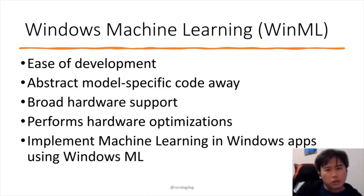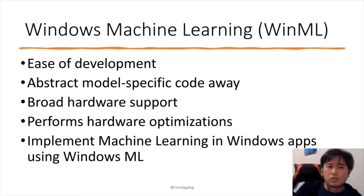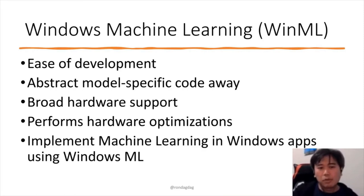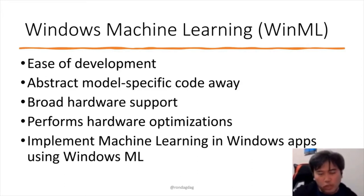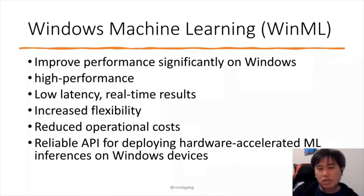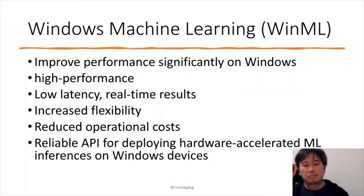Windows Machine Learning makes it easier for Windows developers to abstract model-specific code away. It has broad hardware support, hardware optimization, and is a good way to implement machine learning in Windows applications. The key here is performance — low latency and real-time results — while also increasing flexibility and reducing operational cost, specifically for Windows devices.